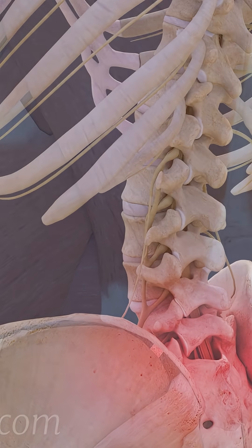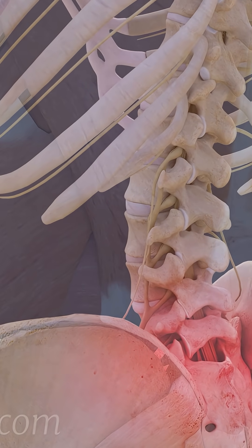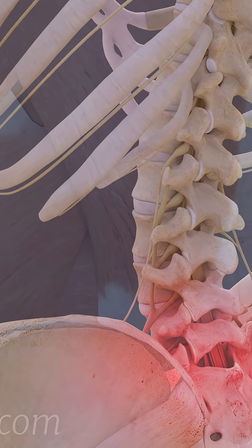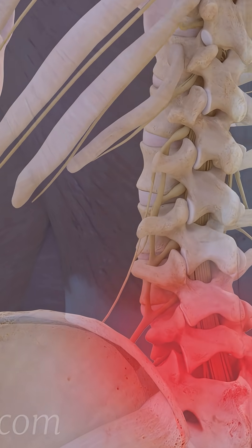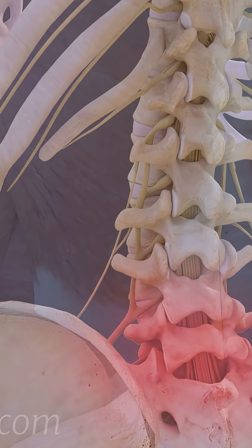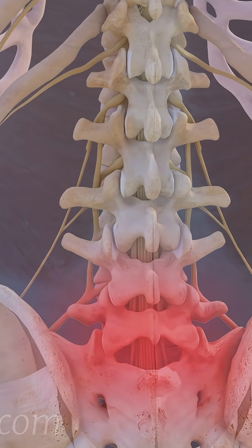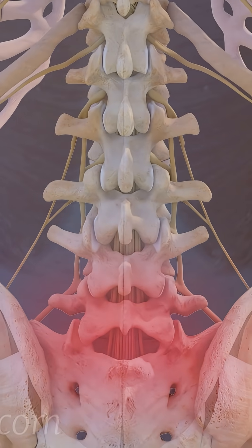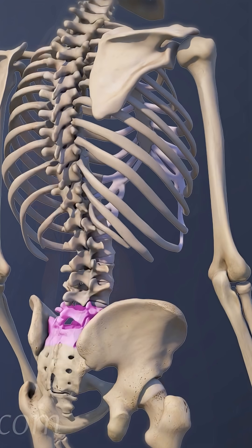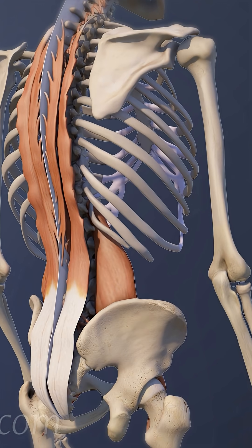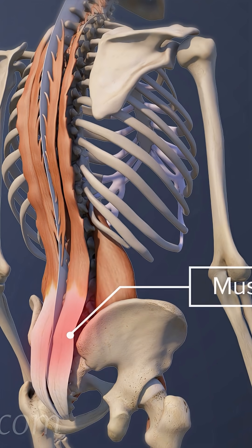Another cause of pain is when the degenerated L5-S1 disc does not absorb stresses, leading to instability and abnormal movement in the motion segment. In response to the L5-S1 segment instability, the back muscles may spasm, causing back pain and stiffness.